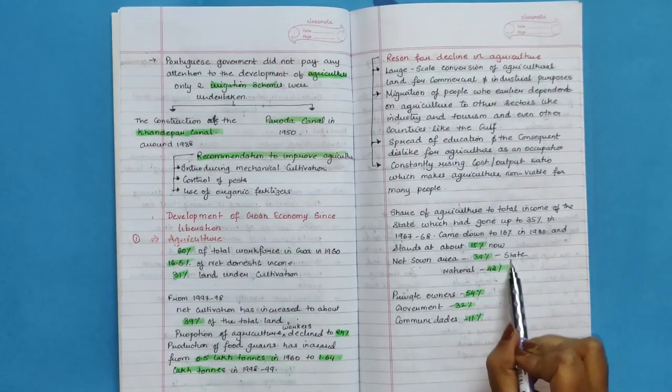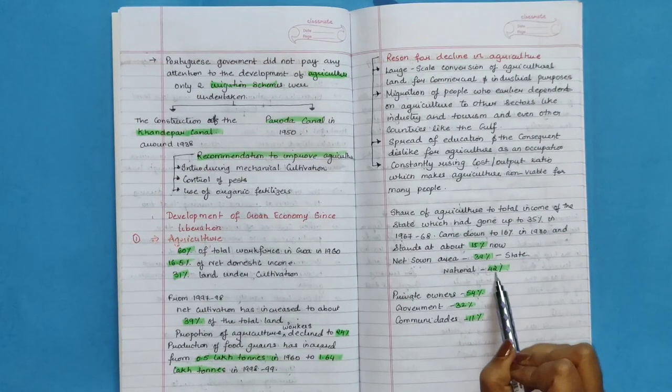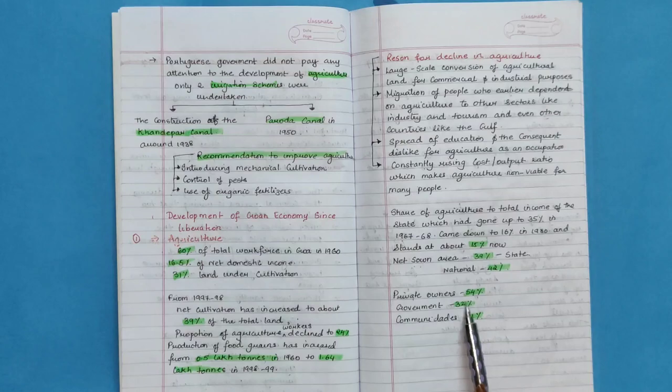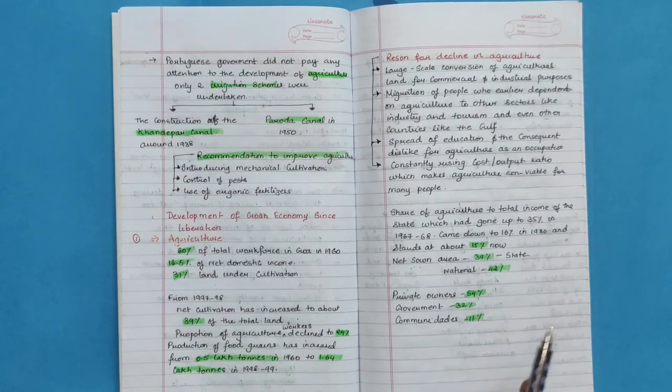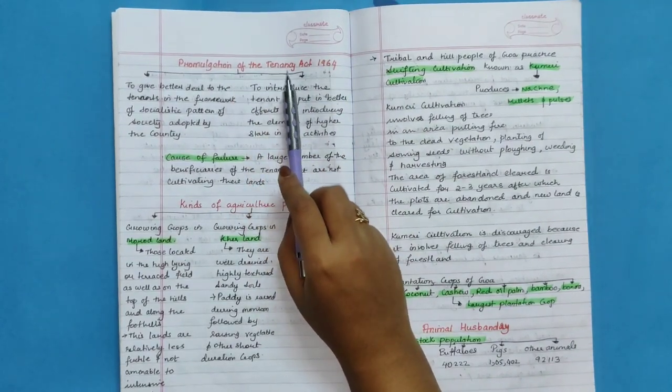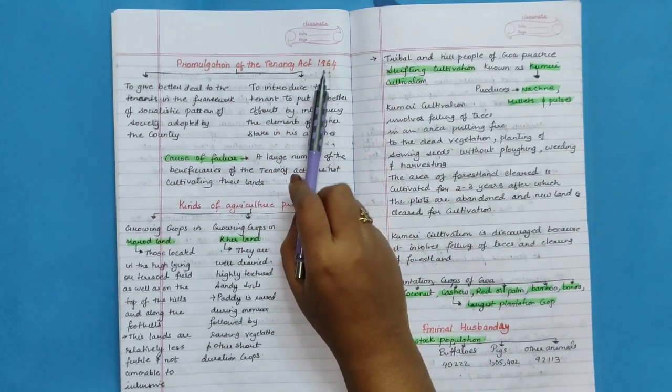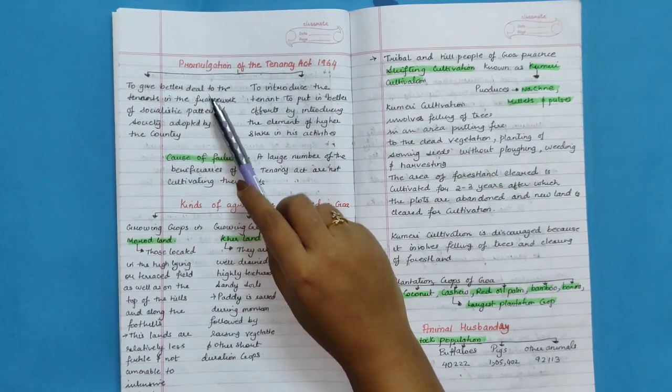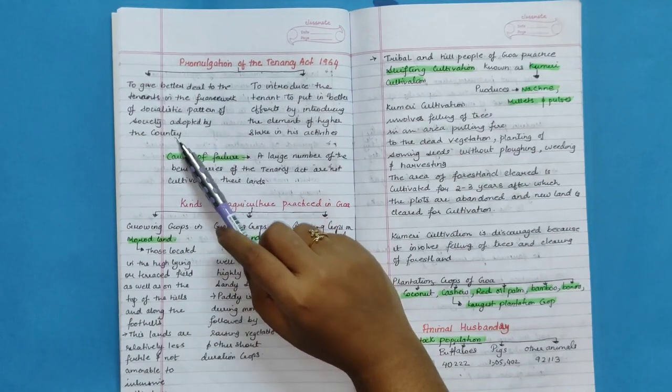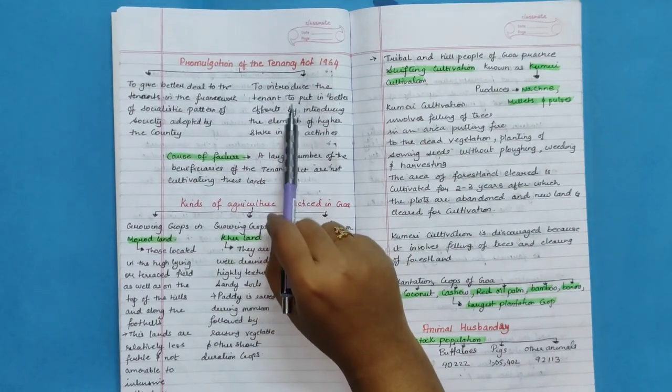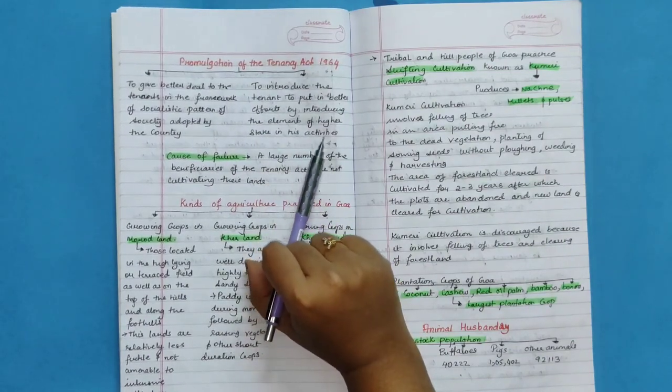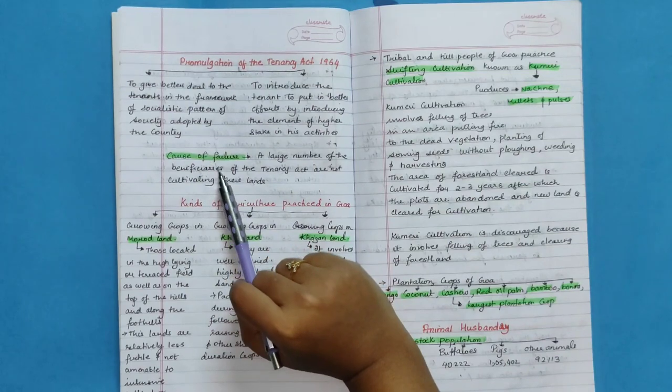Net sown area is 39% of the state and national it is 42%. Private owners 54%, government 32%, and Comunidade 11%. Promulgation of Tenancy Act 1964 to give better deal to the tenants in the framework of socialistic pattern of society adopted by the country. To induce the tenant to put in better effort by introducing the element of higher stakes in his activities. Cause of failure: a large number of beneficiaries of the Tenancy Act are not cultivating their land.